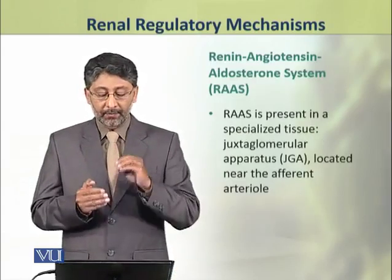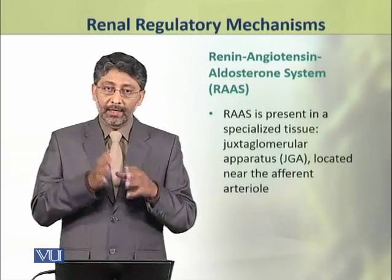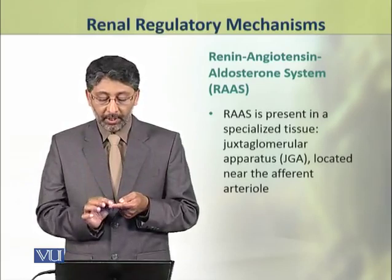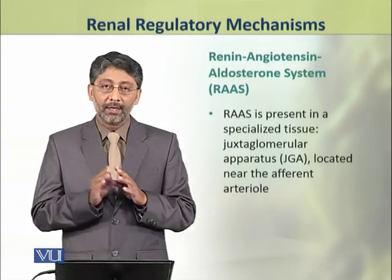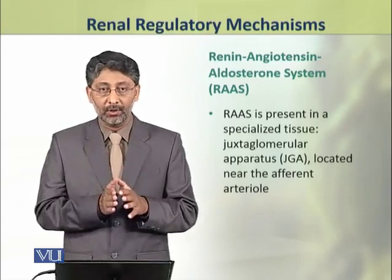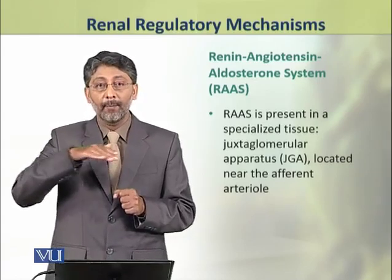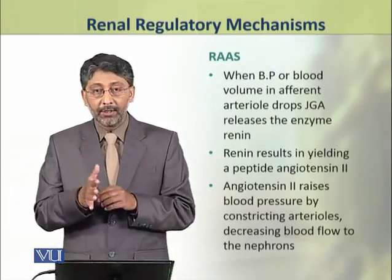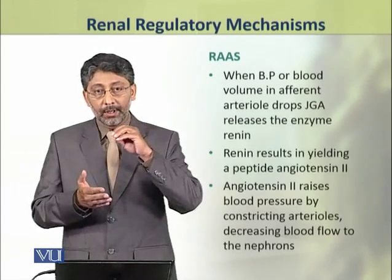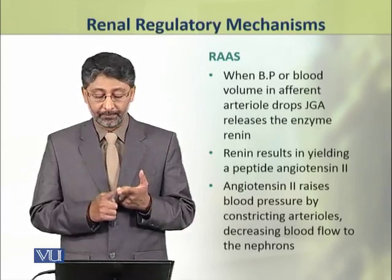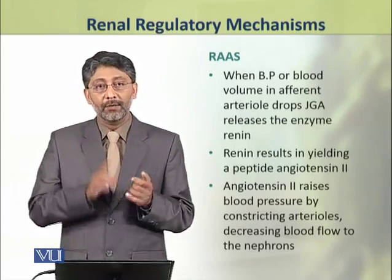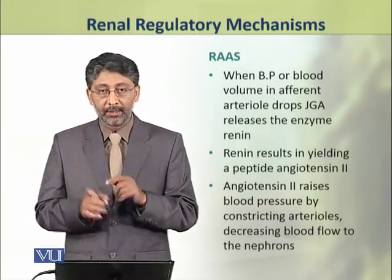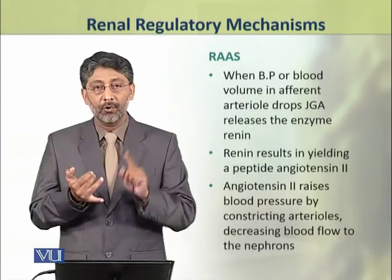The renin-angiotensin-aldosterone system (RAS) is present in specialized tissue called the juxtaglomerular apparatus or JGA, located near the afferent arteriole. Renin is produced here and results in yielding a peptide called angiotensin-2. Angiotensin-2 raises blood pressure by constricting the arterioles, thereby decreasing blood flow to the nephron.